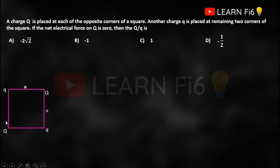To find the force, we need the distance between the two Q charges, which is the diagonal of the square — equal to √2 times the side 'a'. Now we identify the direction of force on charge Q. Assuming the small q charges are positive, the lower q will push Q upward.